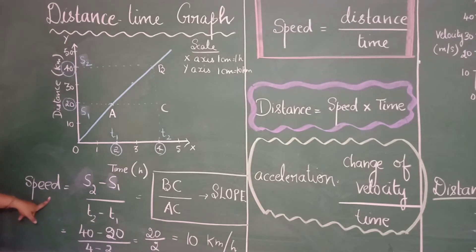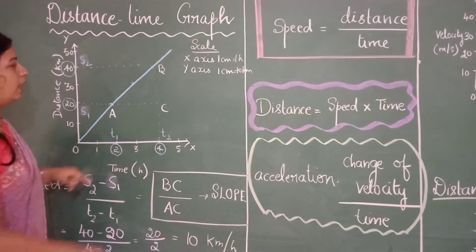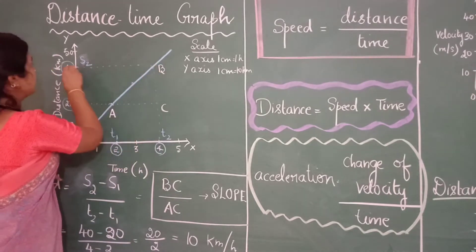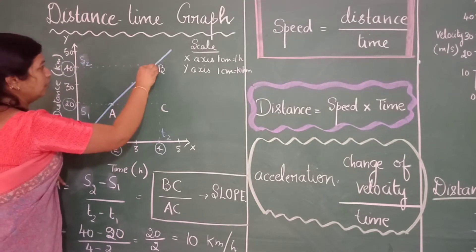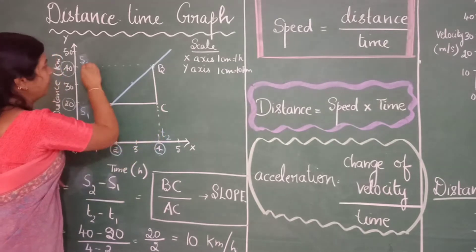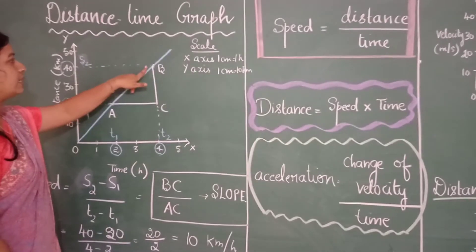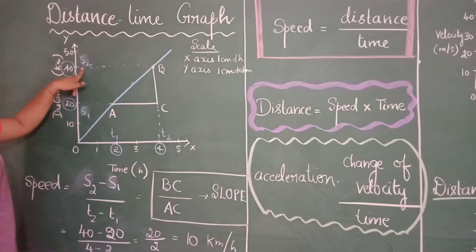So here if I see, speed equal to at t2. If I see the distance is s2. You can just put dotted lines and verify. At time interval t2 the object has travelled the distance of s2. And at time interval t1 the object was at a distance 20 km or at s1.